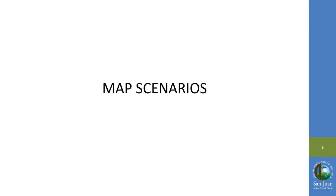Two map scenarios have been developed to meet the variance requirement under the law and reflect CVAP. Both scenarios are legally valid with variance of less than 10 percent. Given the need to reduce the population in Areas 1 and 2 and to increase the population in Areas 6 and 7, it necessitated other small changes to be made to Areas 3, 4, and 5.